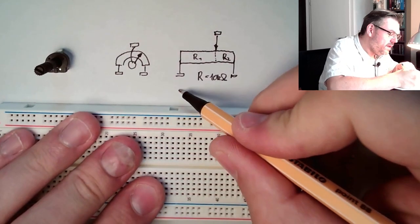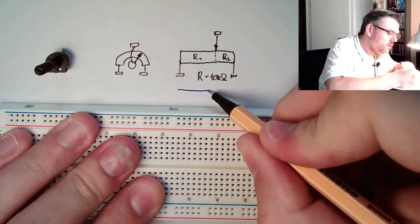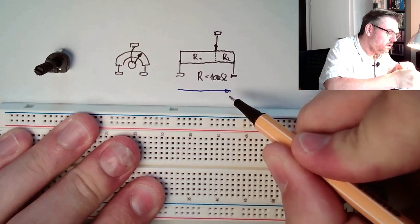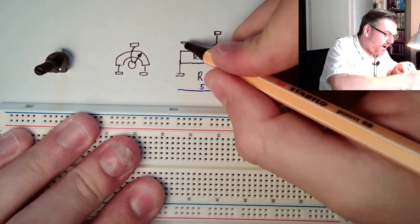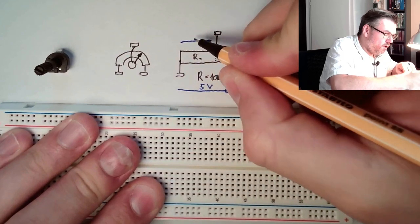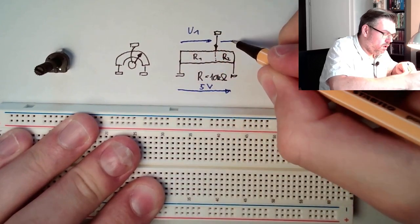If we apply here a voltage of 5 volts, then we are dividing this voltage into one U1 and into one U2.